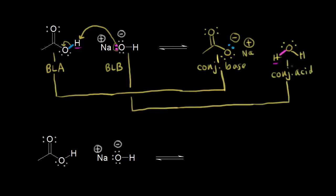The biggest mistake I see when students are drawing acid-base mechanisms is they mess up their curved arrows. I'll show this in red so it reminds you not to do it: they show the proton moving to the hydroxide anion — and that is incorrect. Curved arrows show the movement of electrons, and these two electrons in magenta are the ones that are taking that acidic proton. So don't draw your acid-base mechanisms like this.